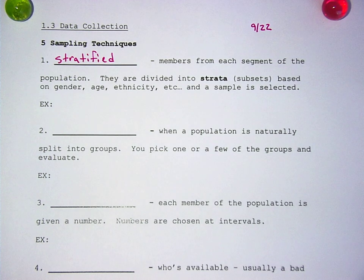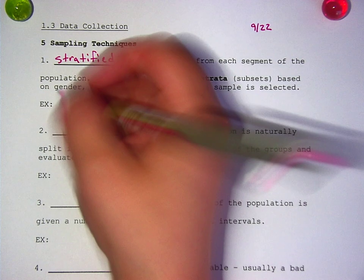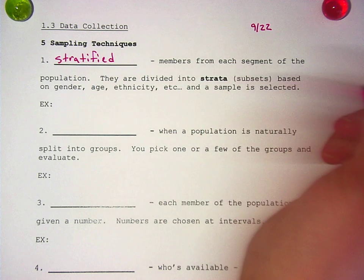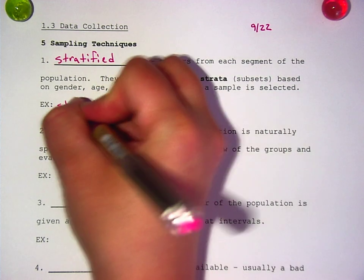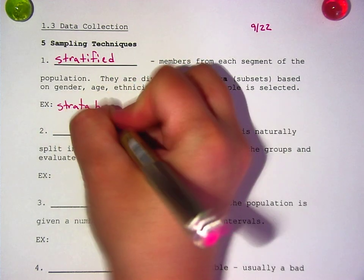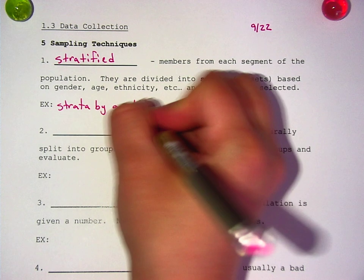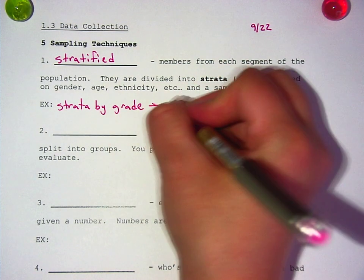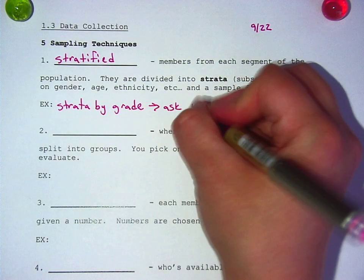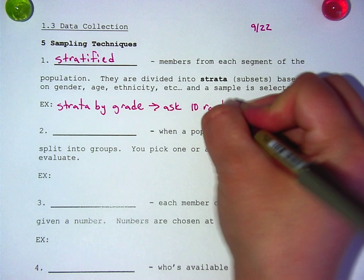Probably not, because most seniors have their licenses, so they probably do drive. Right. And who definitely doesn't have their licenses? Like 6th graders. And if I'm talking about the whole school as my population, I probably should include them. So maybe I would divide them into strata by grade.